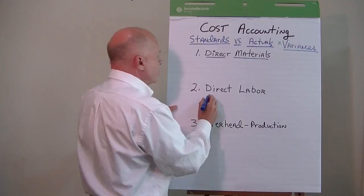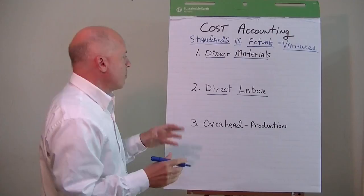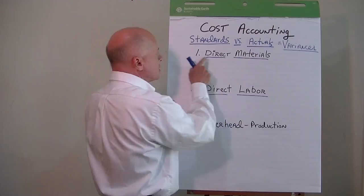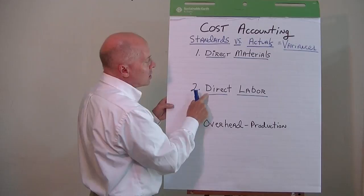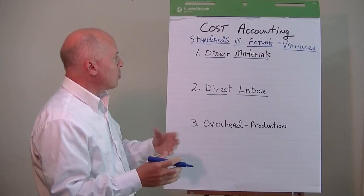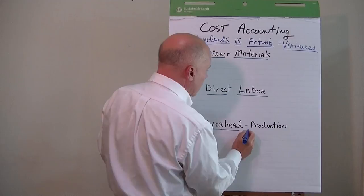Likewise, we have people who are directly associated with actually assembling, putting together, and manufacturing the products — that's direct labor. So we have direct materials as a primary cost of production, and a second type is direct labor: the people actually on the shop floor manufacturing, assembling, and putting the products together. And finally we have a third category, which is overhead — production or manufacturing overhead directly associated with the production and manufacturing of those products.